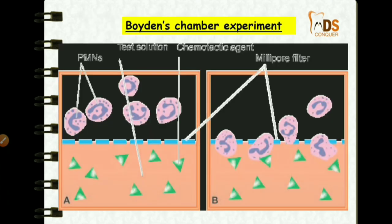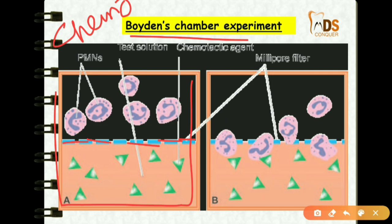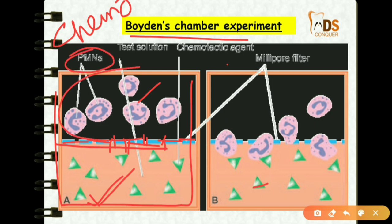Chemotaxis of leukocytes is demonstrated by the Boyden chamber experiment. There are two chambers separated by a millipore membrane with pores. The test solution contains a chemotactic agent; leukocytes are attracted towards this chemotactic agent, move through the pores like diapedesis, and migrate toward the chemotaxis. This experiment elicits and demonstrates the chemotaxis method.